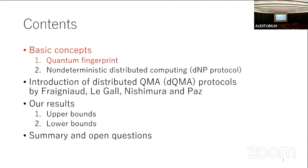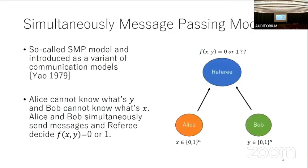First, let me recall quantum fingerprinting as a basic concept underlying our work. The simultaneous message passing model, the SMP model, was introduced by Yao. In this protocol there are three parties: Alice and Bob each have a part of the input, and a referee wants to calculate some Boolean function by receiving messages from Alice and Bob simultaneously.